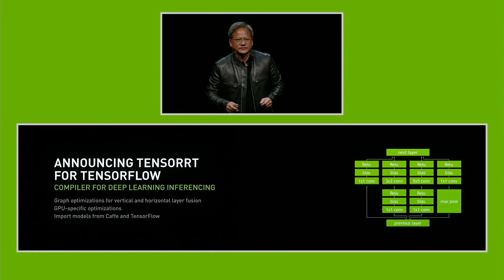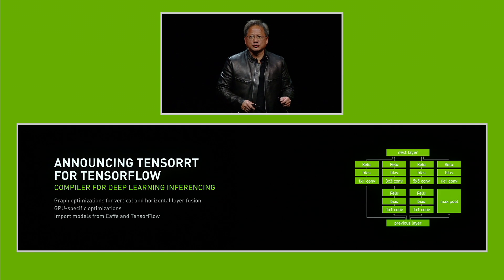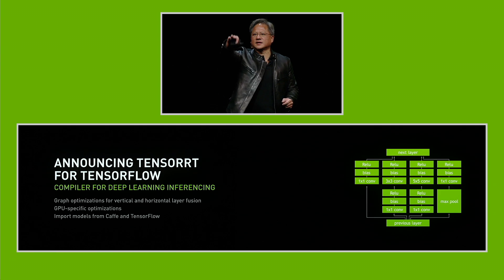The second thing we have to do is compile it, and the third is to optimize it for each one of the targets. Each one of our GPUs has slightly different architectures and slightly different numeric precision, and we have to take advantage of each one of our GPUs. We call it TensorRT — Tensor Runtime — with graph optimization for vertical and horizontal layer fusion.